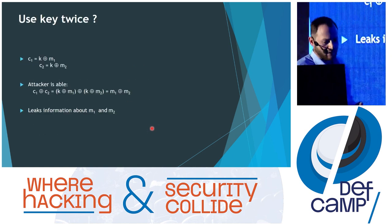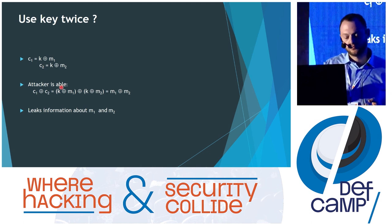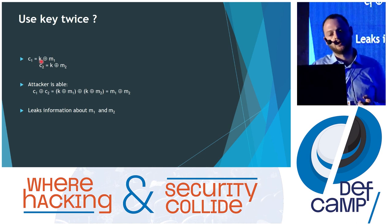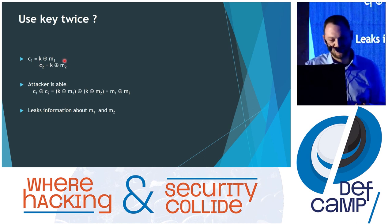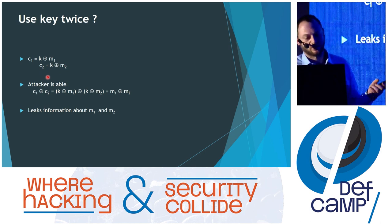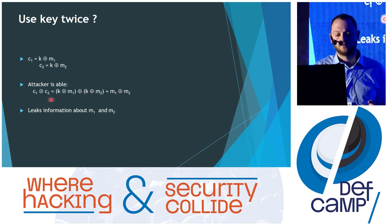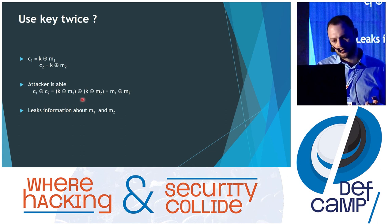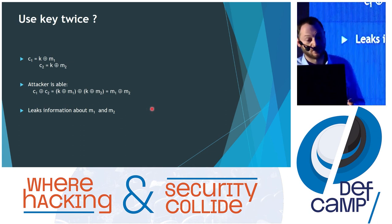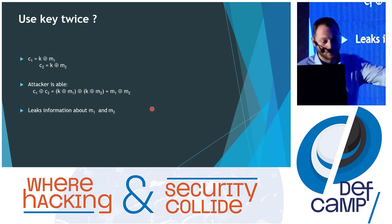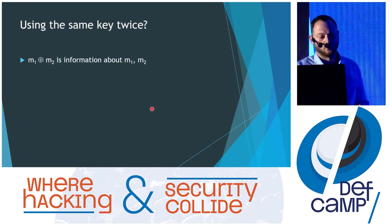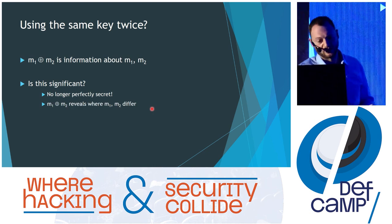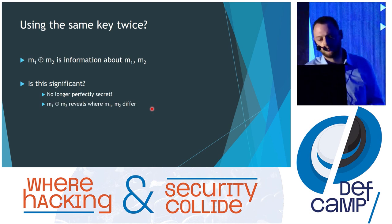Here is a proof that we cannot use the key twice. The first cipher is obtained by encrypting the first message with the key, and the second cipher by encrypting the second message with the same key. When we XOR the ciphers, key XOR key gives zero, and we are left with M1 XOR M2. So if we have two ciphers, we can XOR them and get the XOR of the messages, leaking some information about M1 and M2. This means it's no longer perfectly secret.